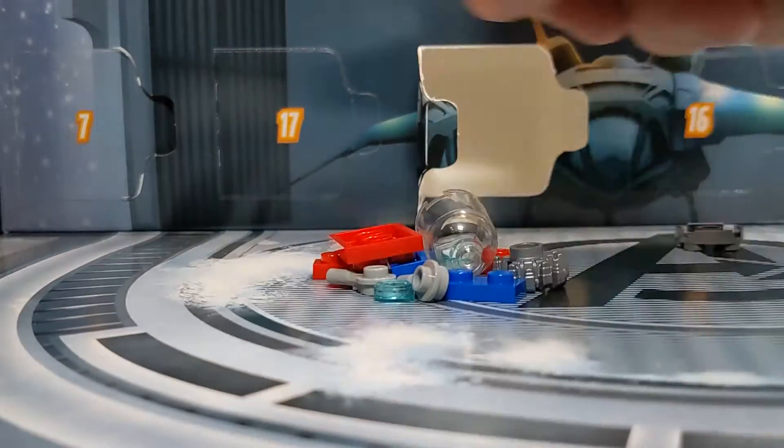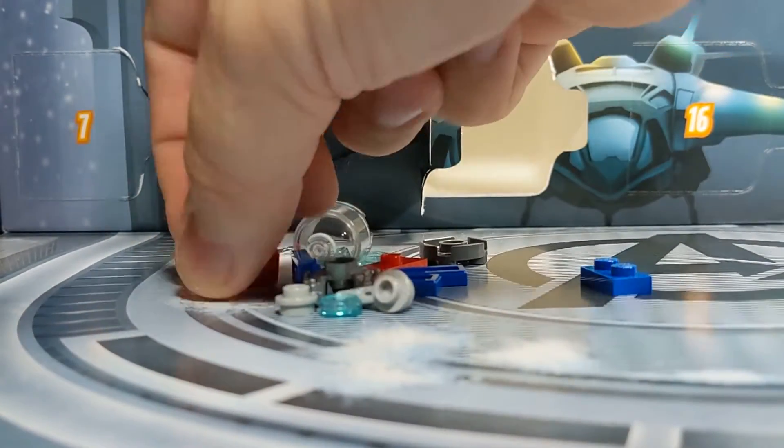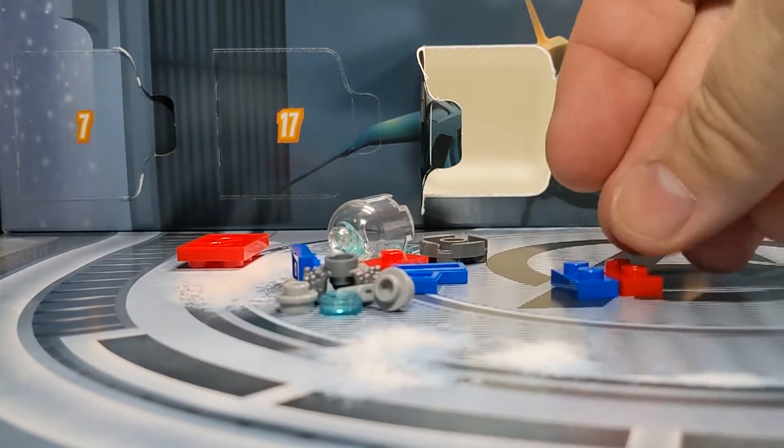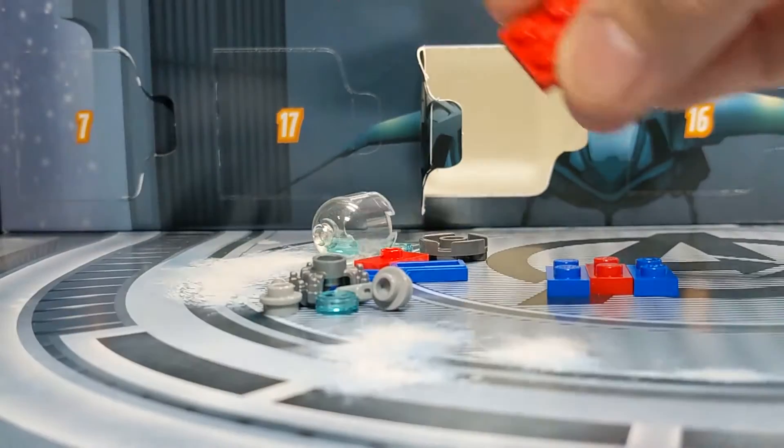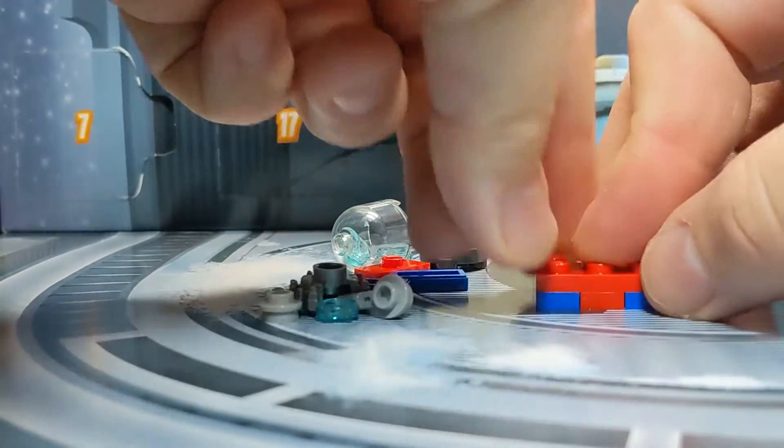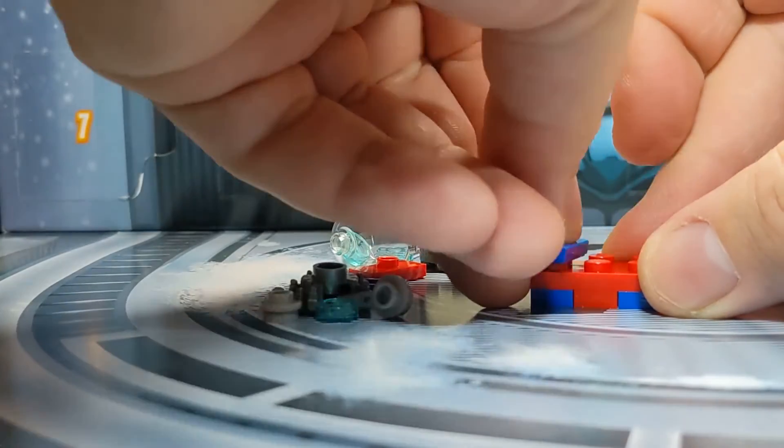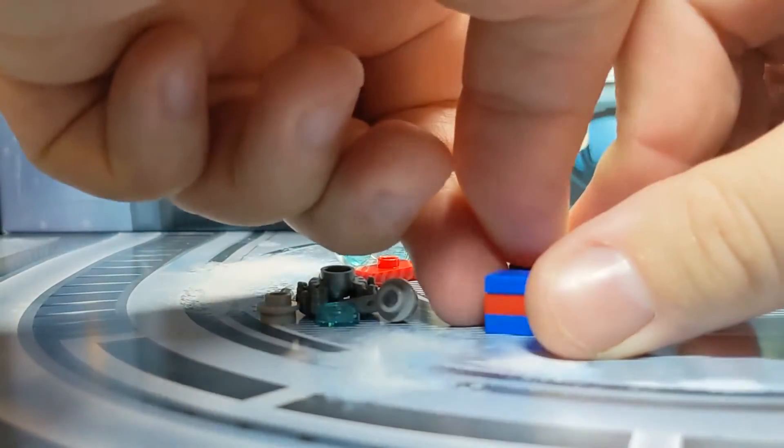All right, here we go. Looks like we're building a Spider-Man present first. So, that. Connect to that. Then on top of it, put another layer of red and blue.